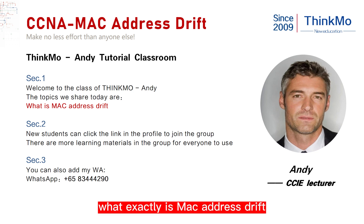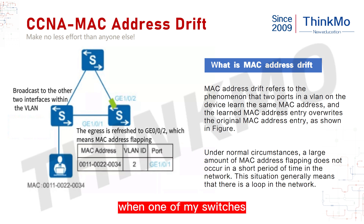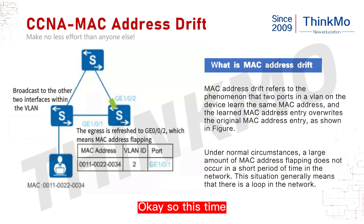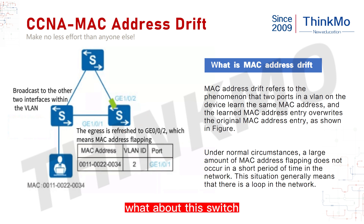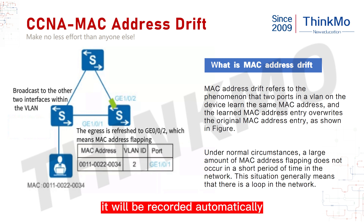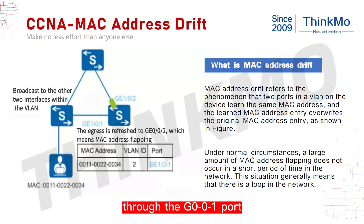Let's look in detail at what exactly is MAC address drift, and under what circumstances it causes the MAC address drift. In this picture, when one of my switches is connected to a PC, the PC has a certain MAC address. This PC sent out a broadcast, which goes out in both directions — to the top switch and to the bottom switch. The switch in the lower right corner, after receiving this broadcast, will automatically record and learn the source MAC address from that broadcast through the G001 port.